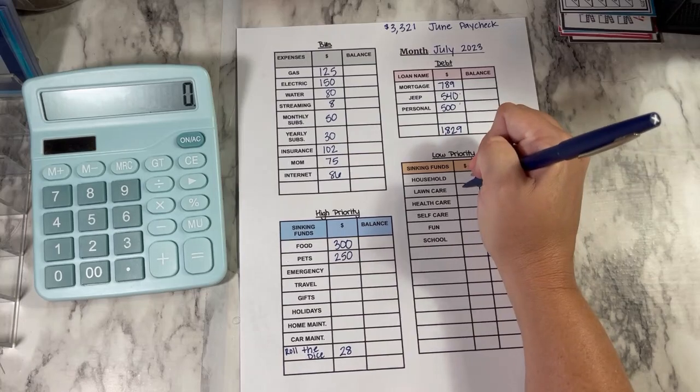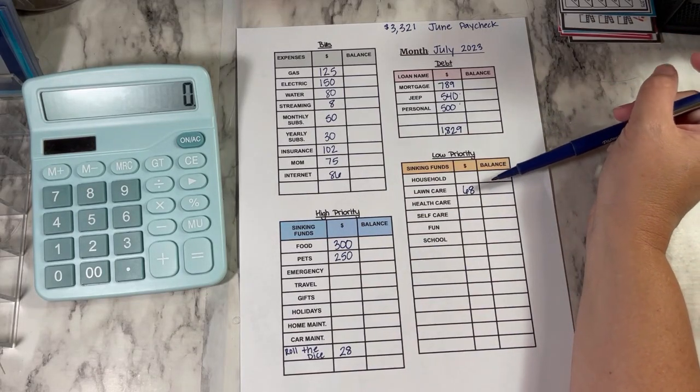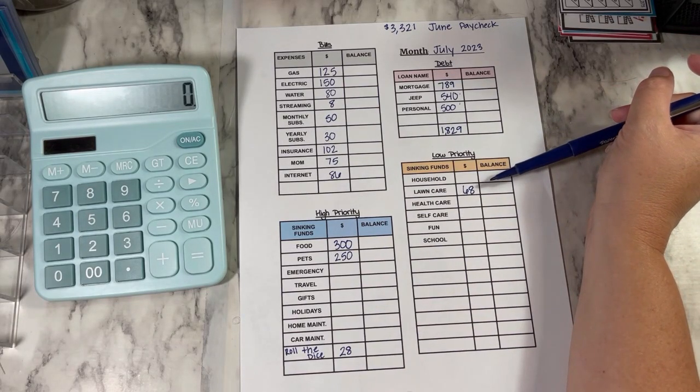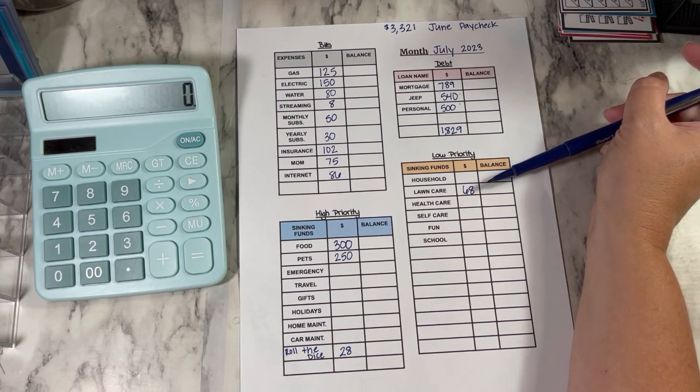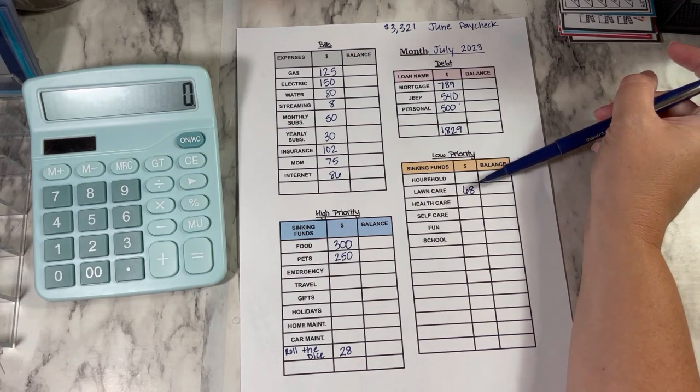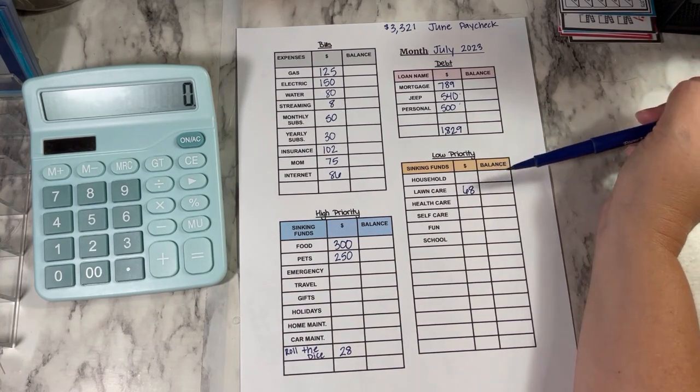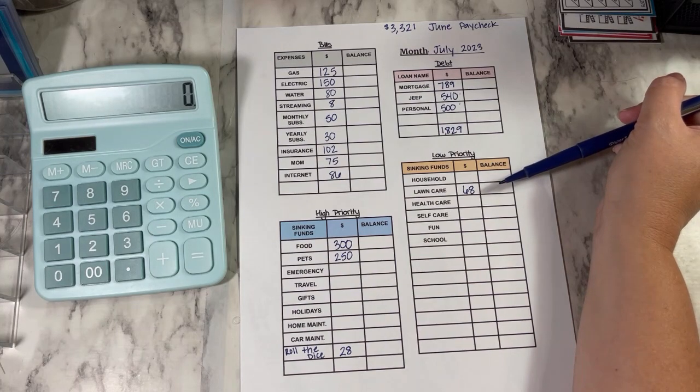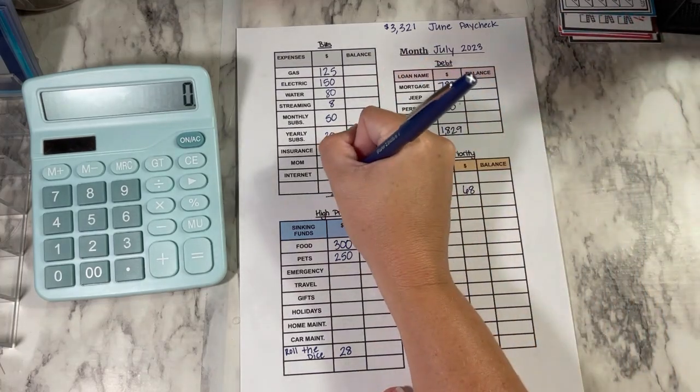Lawn care, I go ahead and do $68 every month. I have a lawn care service that sprays for weeds and that just makes sure that the lawn is looking decent. And they come about six times a year. So I just go ahead and budget every month for that. And then any that I have leftover goes towards either savings or I save up for anything that I need for the lawn or the backyard, flowers, things that I would like to make the lawn or the outdoors look a little bit nicer. So when you add up all the bills, it is $706.